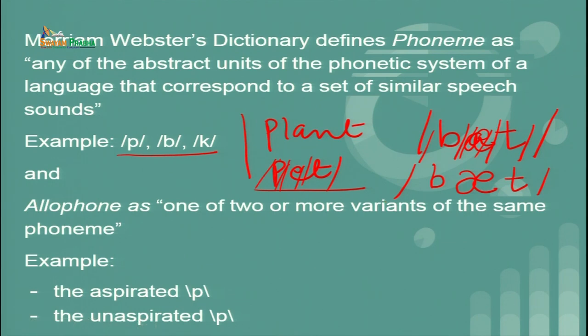An allophone is defined as one of two or more variants of the same phoneme. For example, in the word 'please,' you are slightly putting an aspiration. Aspiration is when sound is released with a little force. The 'p' at the start of the syllable is aspirated. However, when 'p' comes in the middle of a word, it is no longer aspirated — you would say 'spin,' not an aspirated 'spin.' That would not suit the rhythm of the language.